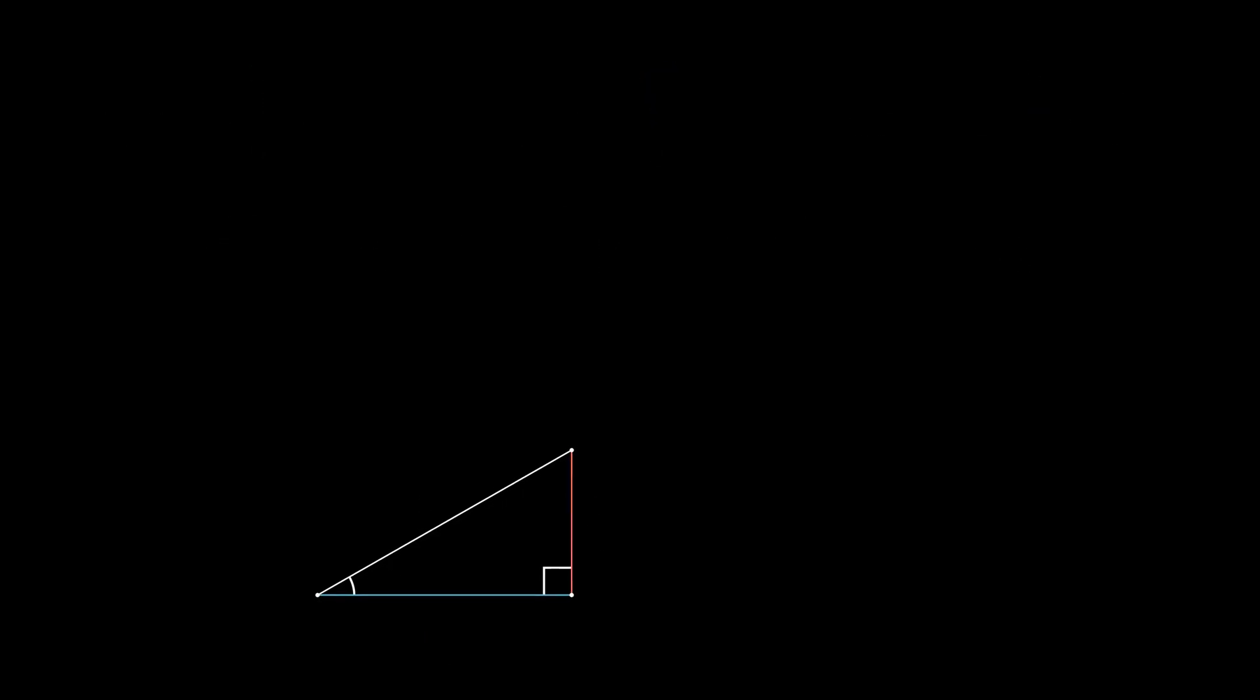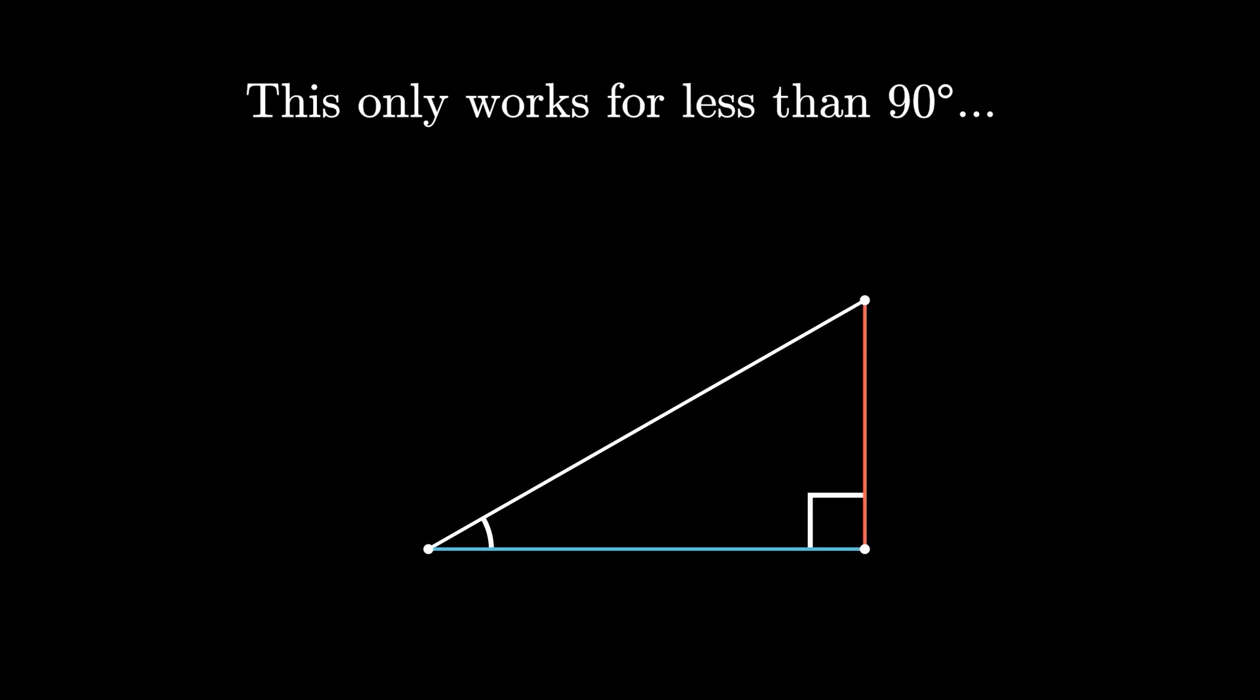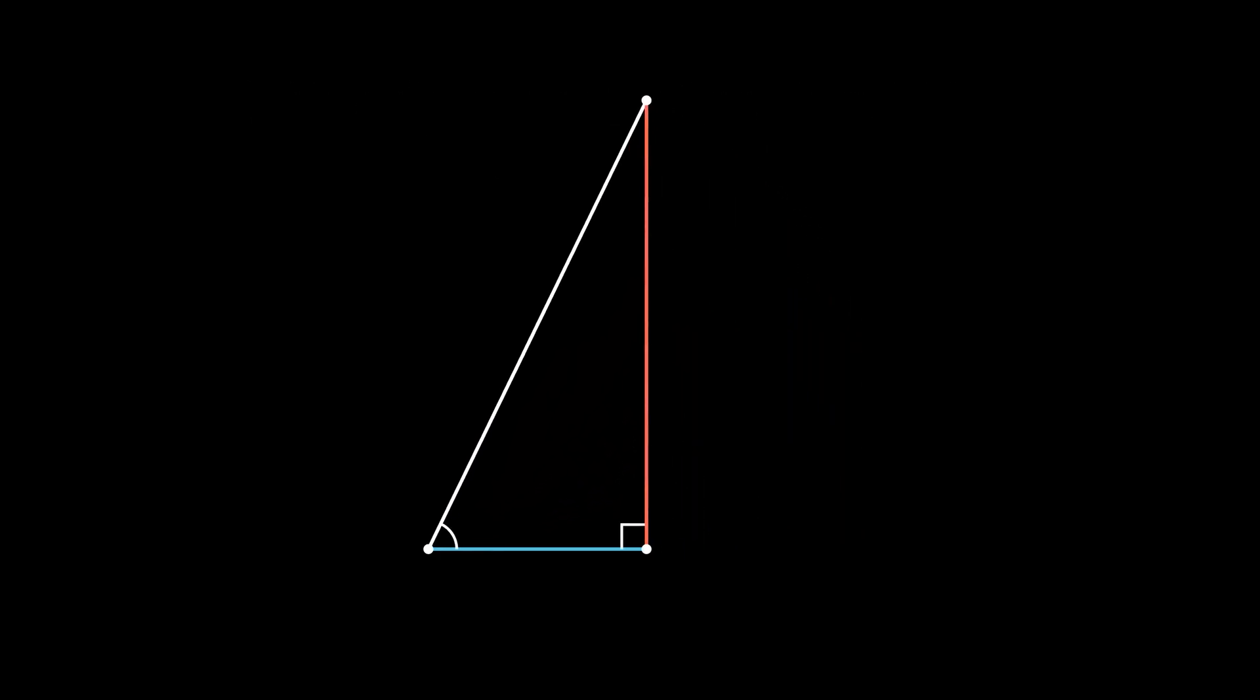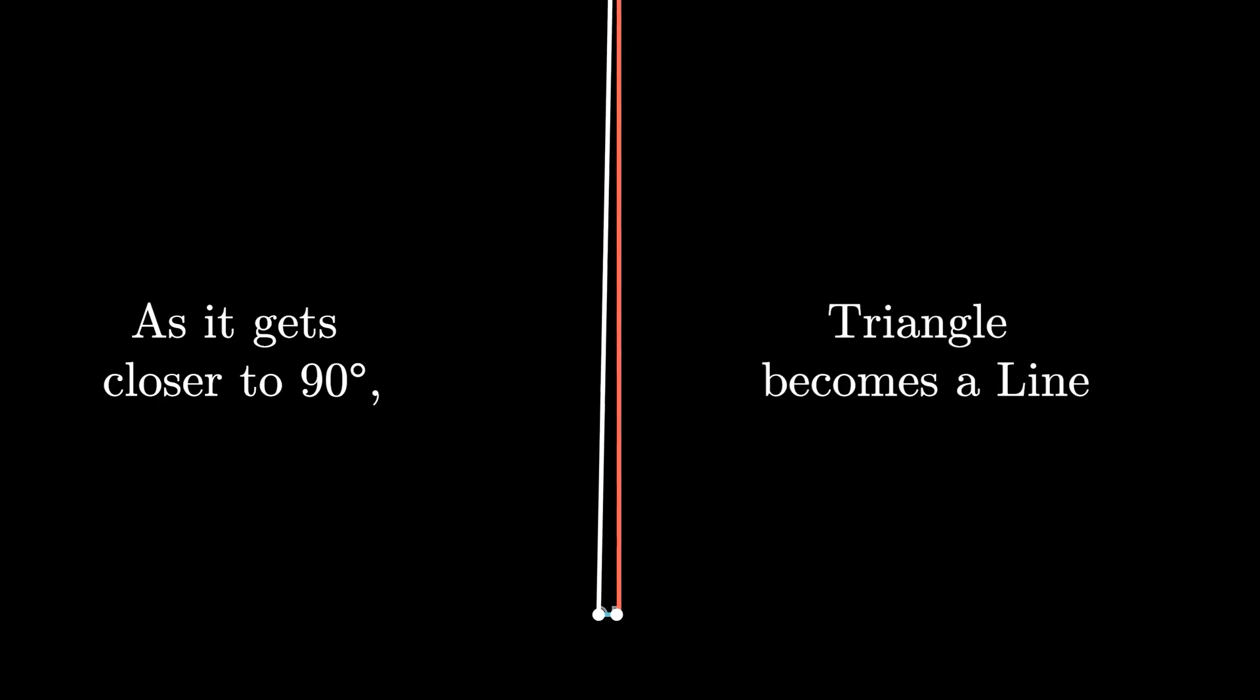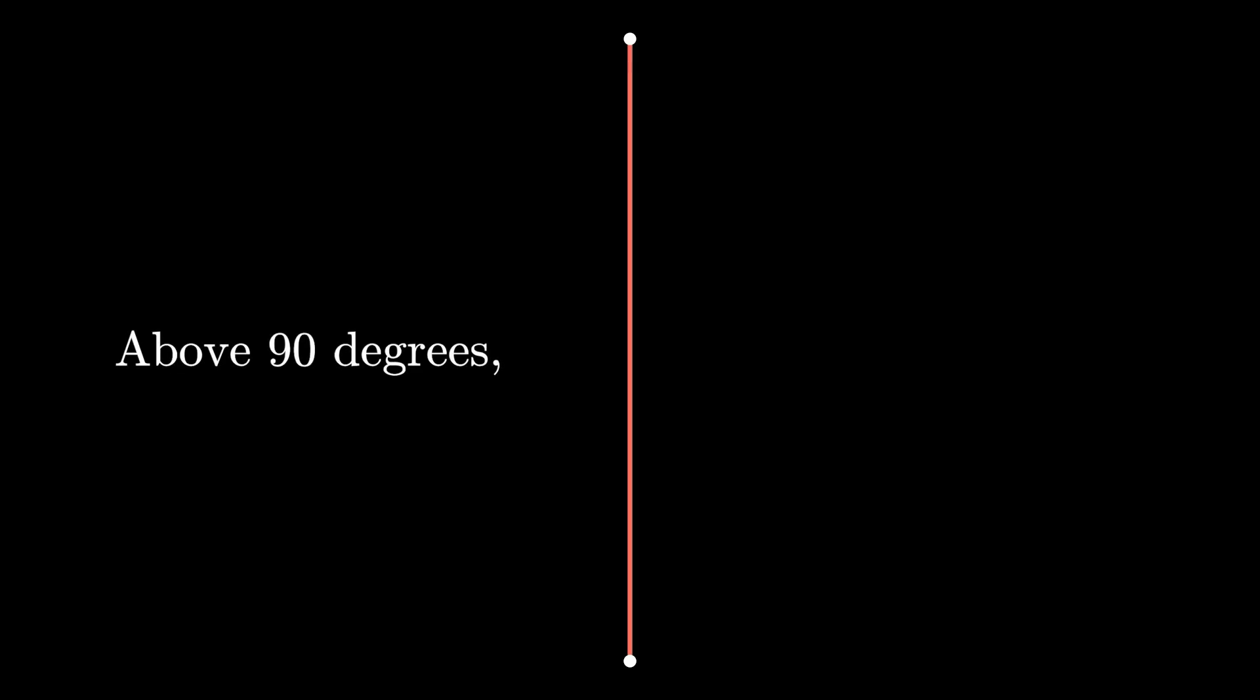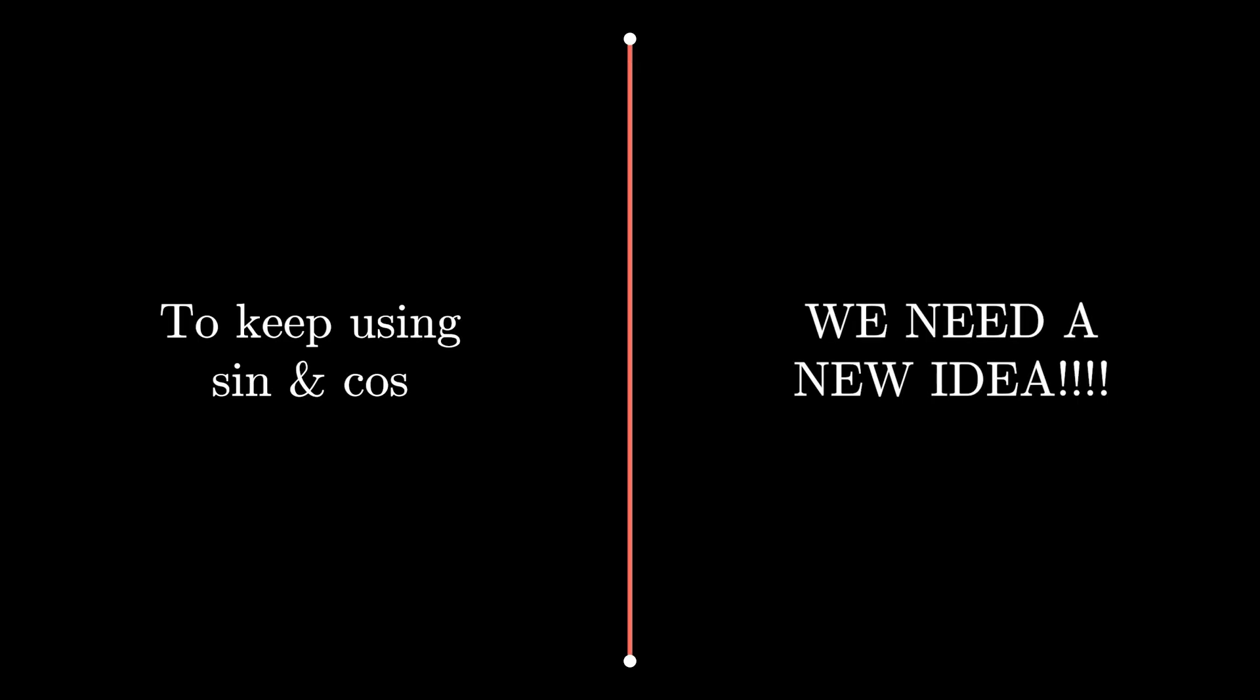But there's a problem: this only works for angles less than 90 degrees. What about angles like 120 degrees or 270 degrees? As we increase theta, the triangle gets taller while becoming narrower at the base. However, as the angle reaches 90 degrees, the triangle becomes a line and not a triangle anymore. So above 90 degrees we can't build a triangle. To keep using sine and cosine, we need a new idea.